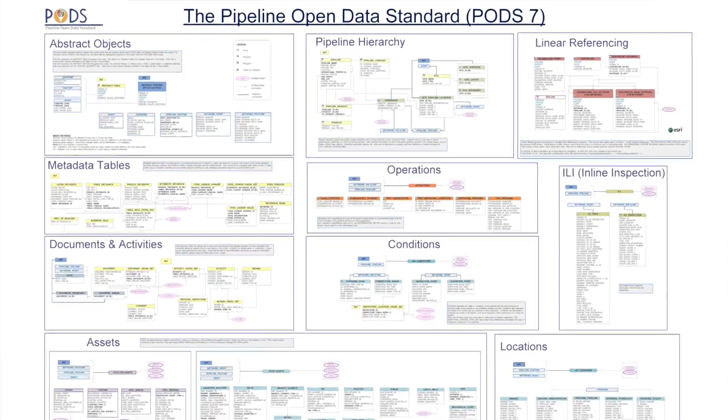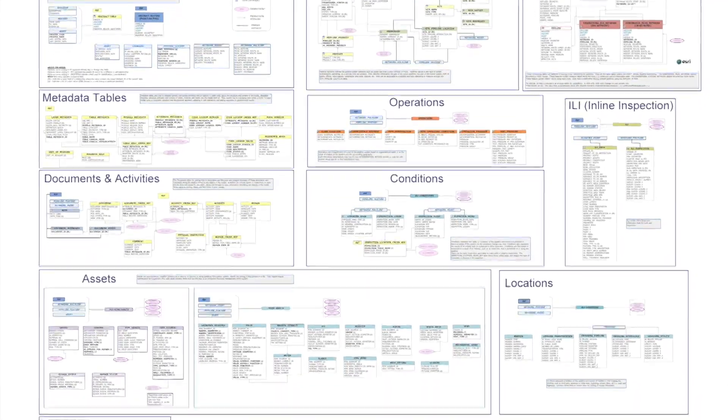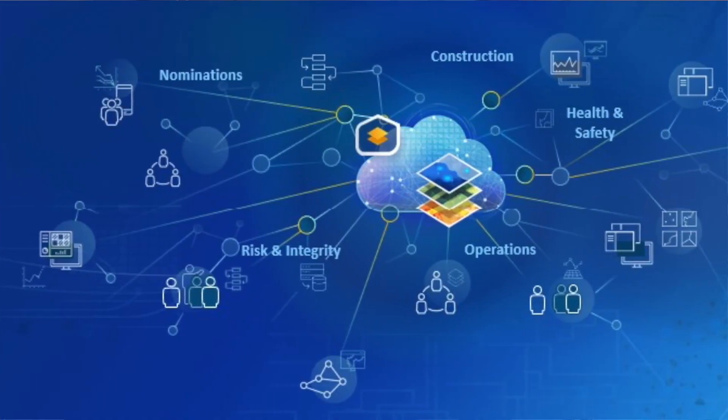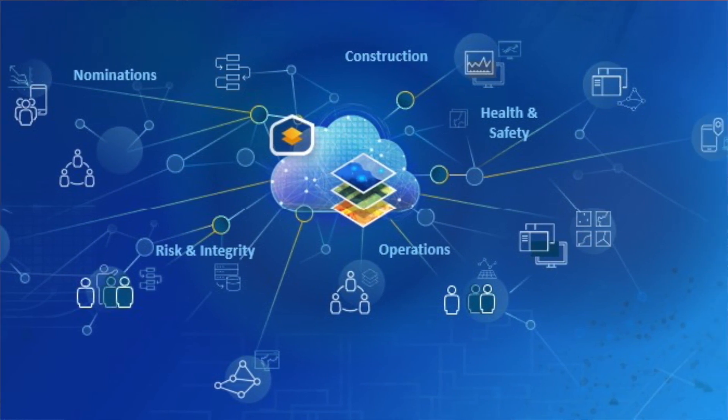The PODS model allows you to manage the pipeline centerline and attributes such as the specifications, in-service state, commodity, and status — everything you need to know about the pipeline for regulatory submittals, in-line inspections, HCA, or risk analysis. The PODS model was designed to comply with local and federal regulations. As long as data maintenance processes are implemented and maintained, the model allows for an operator to see the history of a particular asset throughout its entire lifecycle.